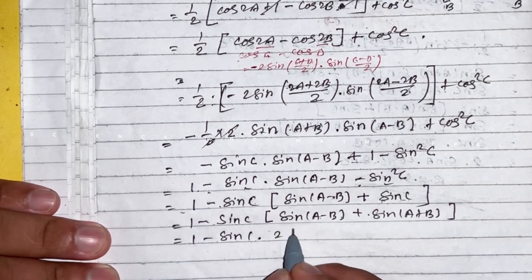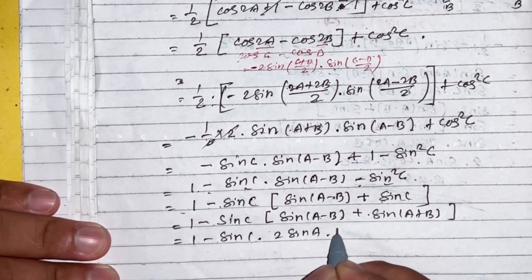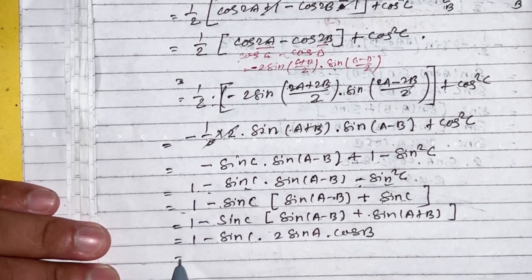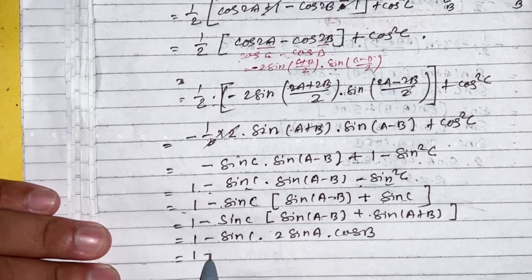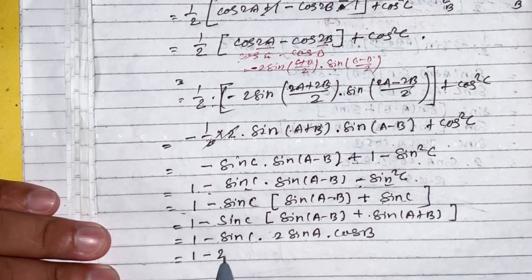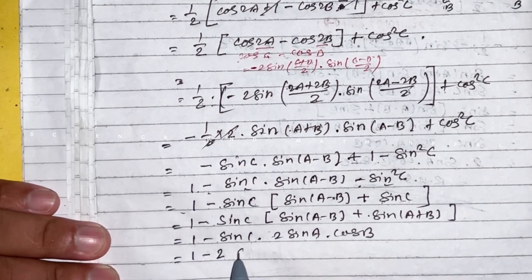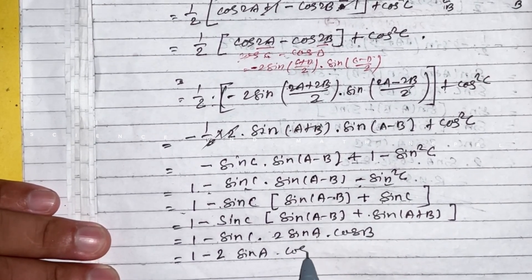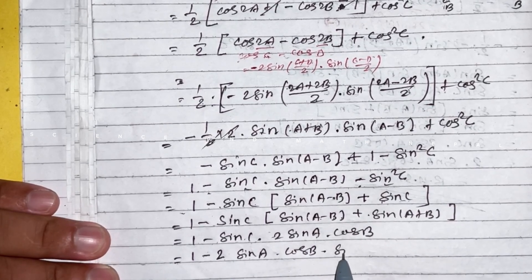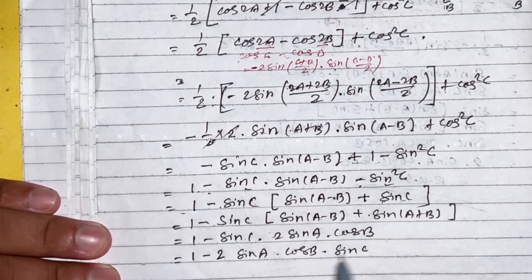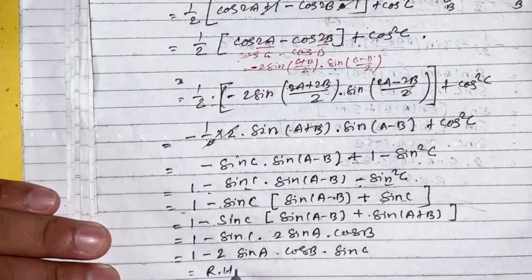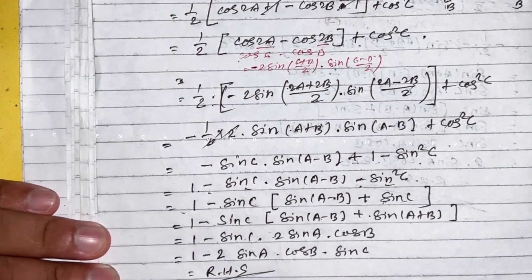Using sin(a minus b) minus sin(a plus b) equals minus 2 cos a sin b, the expression simplifies to 1 minus 2 sin a cos b sin c, which equals RHS. Hence proved.